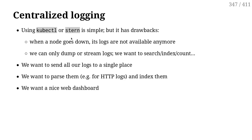One of the drawbacks of Stern, or even kubectl logs, is that when I do kubectl logs or Stern, it has to go to the node that is running the pod. Imagine that I'm trying to access some logs, but the node that was running that pod is down. Then I can't access the logs — I have to wait until the node is back because the logs are only in that node. Furthermore, I can't do a global search on all my logs. If I want to look for a specific error message, I can't do that. I have to retrieve all the logs and then grep and aggregate.